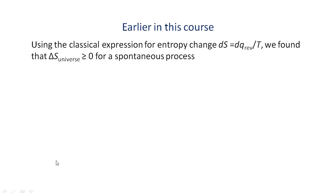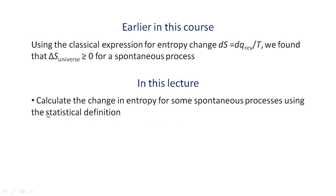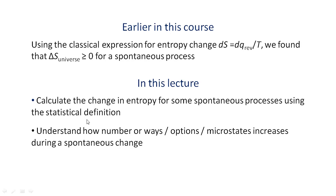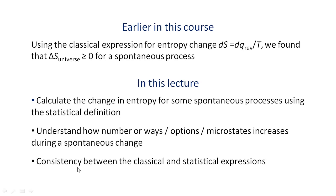In this lecture, we will calculate the change in entropy for some spontaneous processes using the statistical definition of entropy. We will see through these examples how the number of options or ways in which energy is distributed — that is, the number of microstates — increases during a spontaneous change. We will also see the consistency between the classical and statistical expressions for entropy change. Let us begin with a simple example of a heat transfer process to get insight on how exactly the number of microstates increases in a spontaneous process.